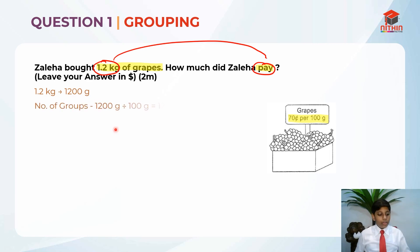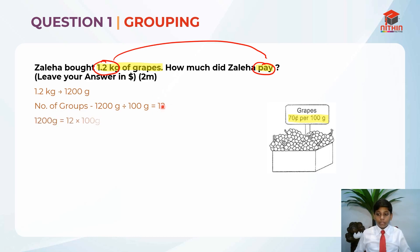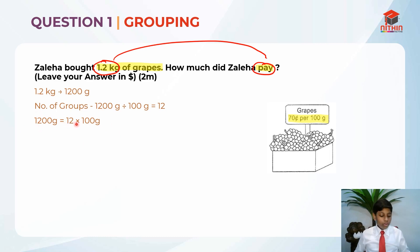Now we apply the concept of grouping. The number of groups equals 1,200 grams divided by 100 grams, which equals 12. The number of groups means how many 100 grams does it take to make 1,200 grams — it takes 12 of them. So, 1,200 grams equals 12 times 100 grams.